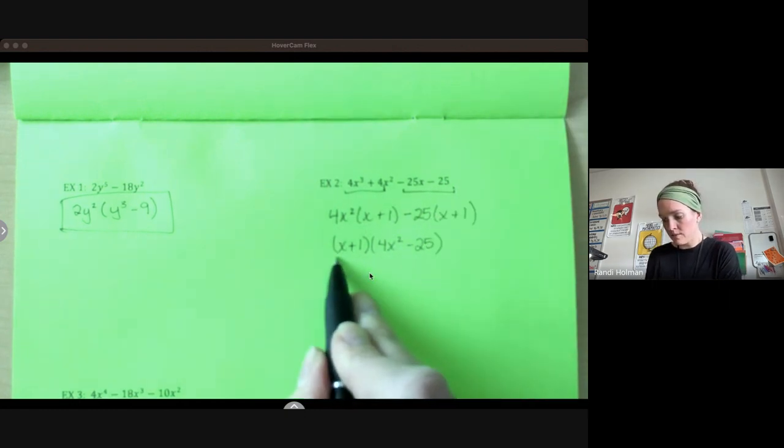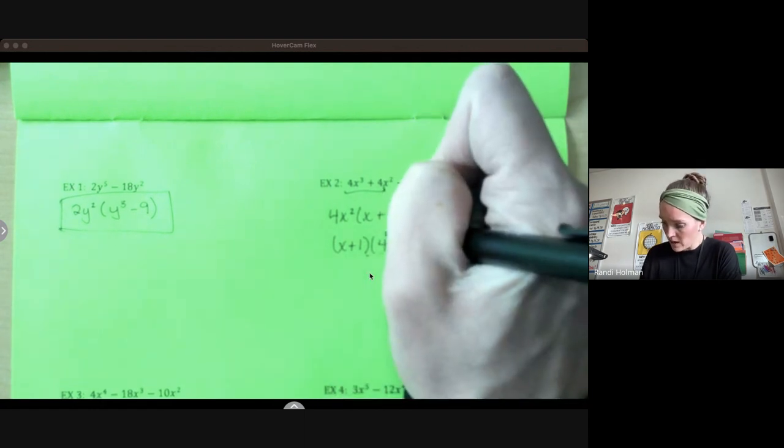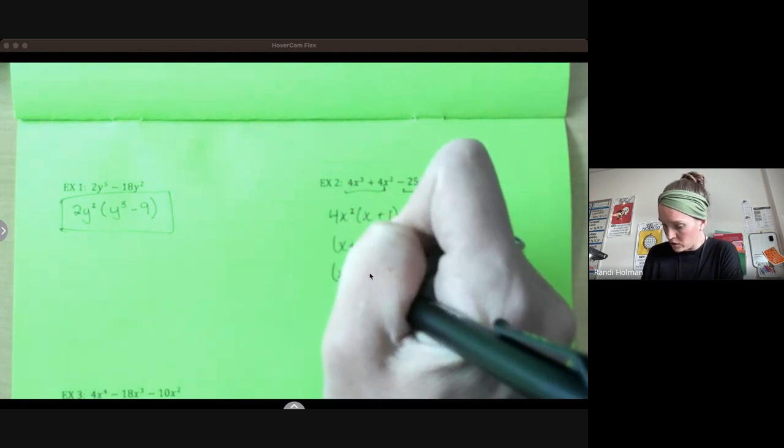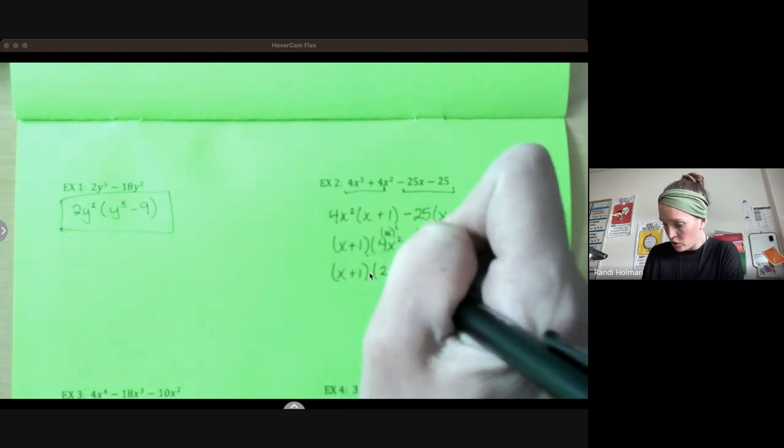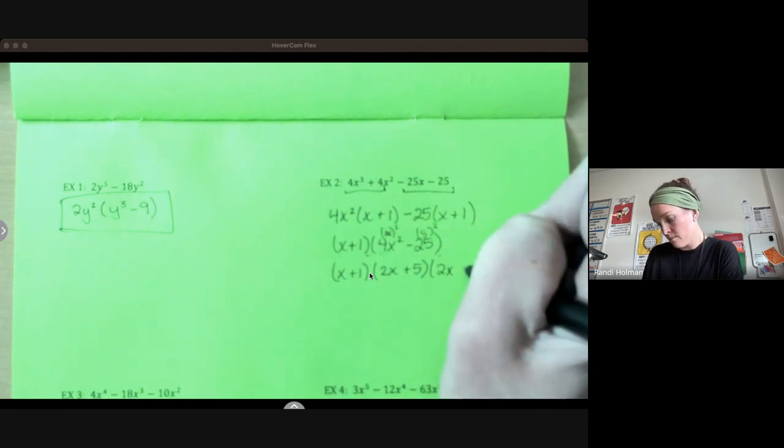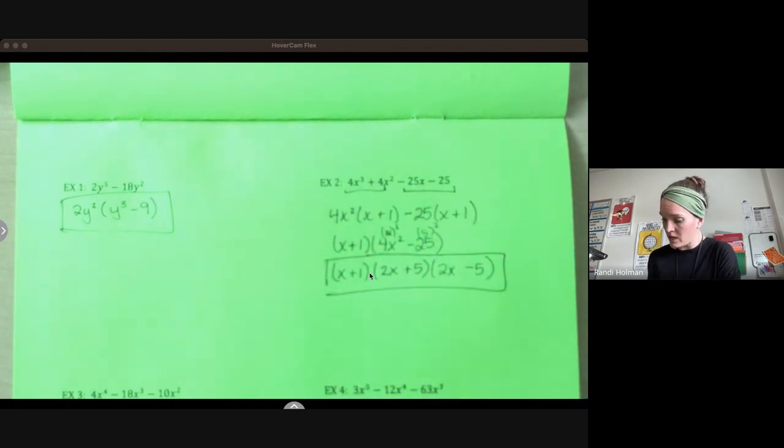Check your factors. No greatest common factor. Oh, that's a difference of squares. This is 2x squared, and this is 5 squared. So this factors to 2x + 5 and 2x - 5. Check again. Looks like we're good. All done.